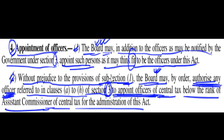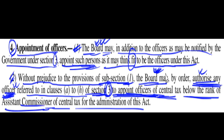To summarize: under Subsection 1 of Section 4, the Board has the power to appoint such persons as it thinks fit to be officers under this Act. Under Subsection 2, the Board has the power to authorize any officer appointed under Section 3 to appoint officers of central tax below the rank of Assistant Commissioner. So officers notified under Section 3 can only appoint officers of a rank below Assistant Commissioner. This is all about Section 4, which deals with the Board's power to appoint officers.